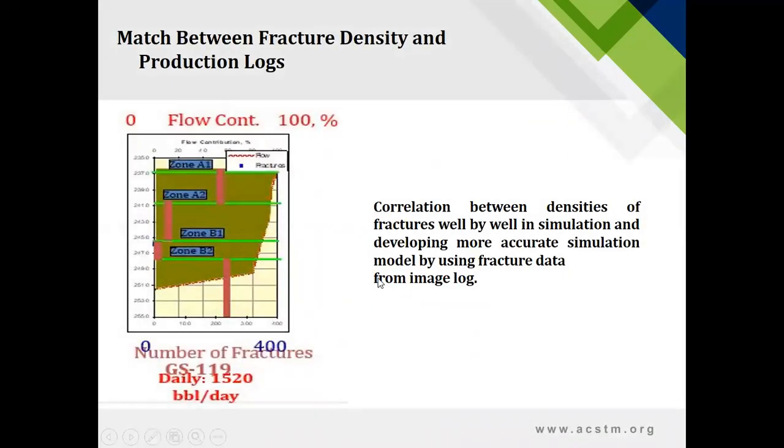So they did the correlation between density of fractures well by well. In GS119, which is high, had the highest number of fractures. And then we compared with the production. It shows that if you have the highest fracture density, you have highest production because in this field, most fractures are connected. And the number of fractures are high and connected. So you have high production in this field.